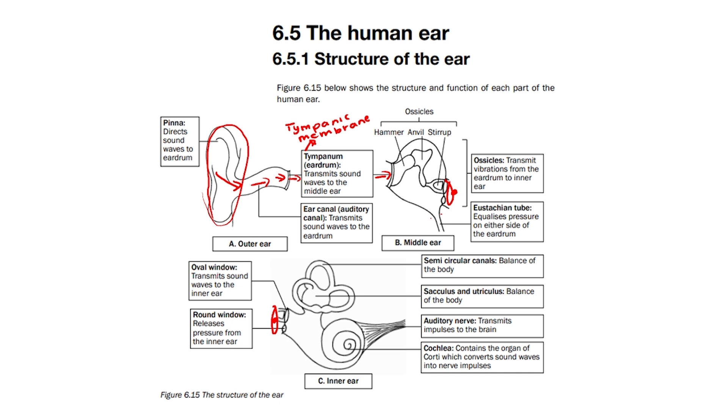We have the oval window. The oval window transmits sound waves to the inner ear and receives vibrations from the ossicles.